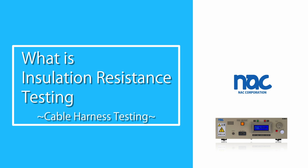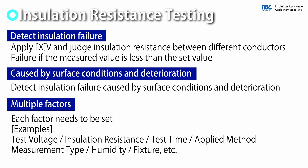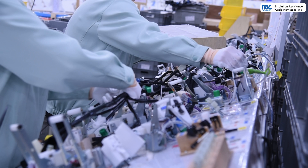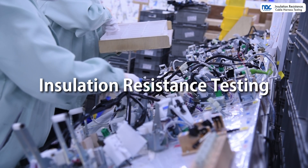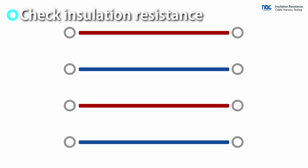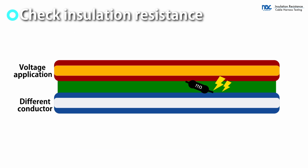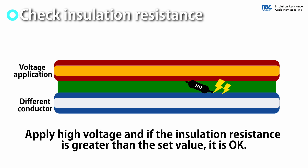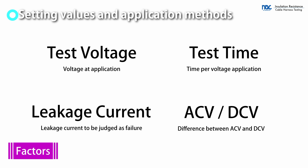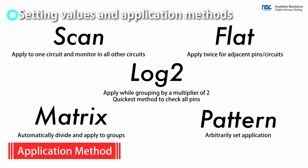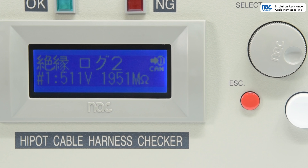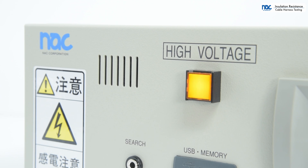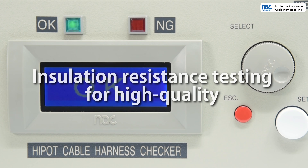Mac Corporation. One of the items in cable harness testing is insulation resistance testing. It is a test to measure the insulation resistance between different conductors and determine if it is greater than a set value. Multiple factors and application patterns must be properly set. In addition to wiring testing, insulation resistance testing can be conducted for high-quality harness testing.